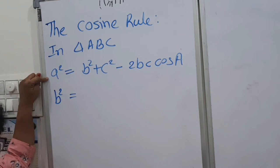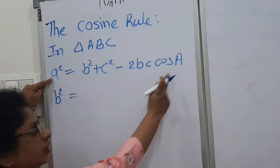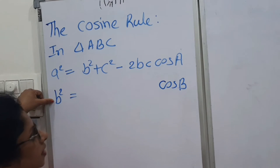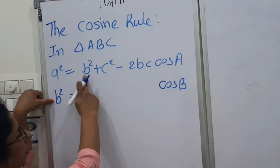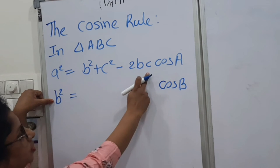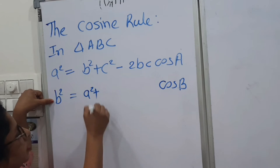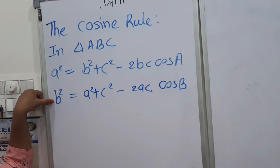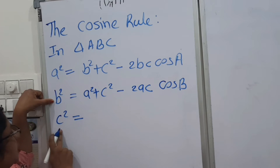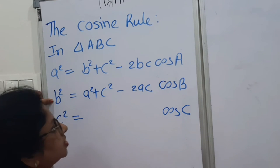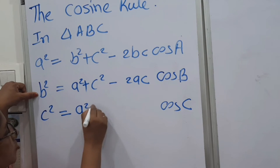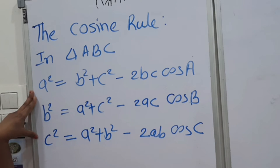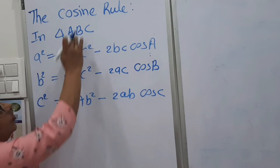Logically, with the help of the first statement you can find the others. Here it is cos A with A squared, so for the second statement we have cos B, and B squared becomes A squared plus C squared minus twice AC cos B. Similarly for C squared, we write cos C and A squared plus B squared minus twice AB cos C. In this way you can keep all three statements in mind.